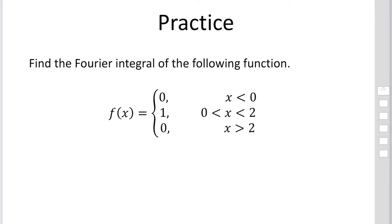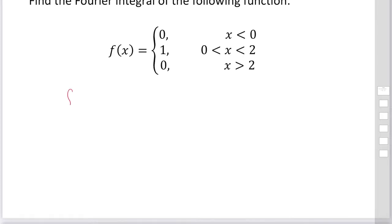The Fourier integral of f(x) is expressed as 1 over pi, integral from 0 to infinity of a(alpha) cos(alpha x) plus b(alpha) sin(alpha x), with respect to alpha.